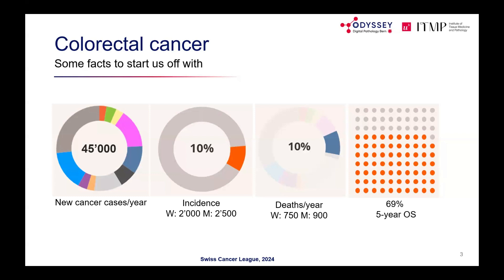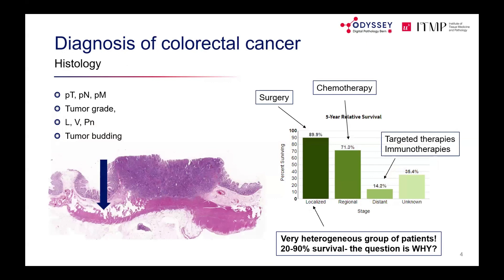Although the five-year overall survival rate has improved from around 65% to about 69%, this remains poor — especially compared to breast cancer, which has an 85–90% survival rate. Colorectal cancer has seen limited improvement and fewer treatment options.